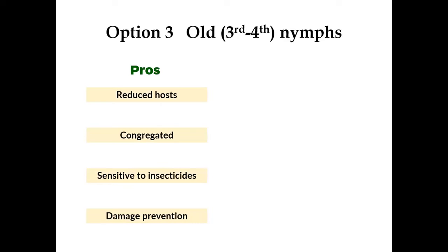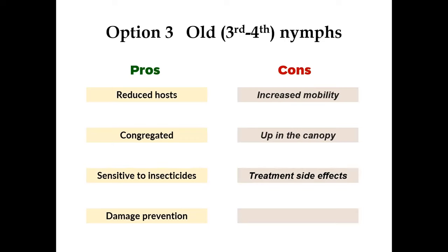For older nymphs, the host range is reduced, they are still congregated to some degree, and still sensitive to insecticides. If you treat them at this point, you can prevent damage, especially for grapes or other economically important crops. But at this stage they are more mobile, some of them are up in the canopy, and there might be treatment side effects if treating walnut, with limitations on what insecticides you can use and when.